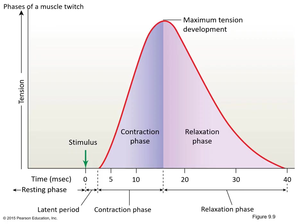Now that the action potential has reached the muscle cell and caused contraction, let's look more closely at the contraction of a single muscle fiber — called a muscle twitch. A muscle twitch starts from a stimulus, where the action potential crosses over. There is a break before contraction occurs — from stimulus to contraction phase, where nothing is occurring, is called the latent period. From there, we increase tension development: that is the contraction phase. Once peak tension is reached and tension begins to decrease, we have entered the relaxation phase.